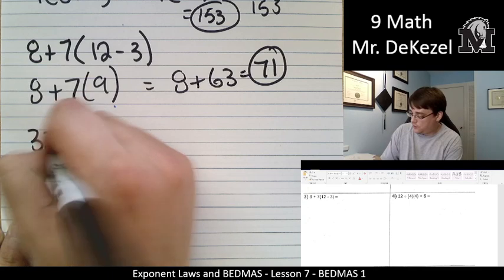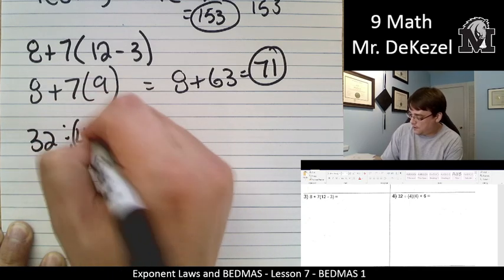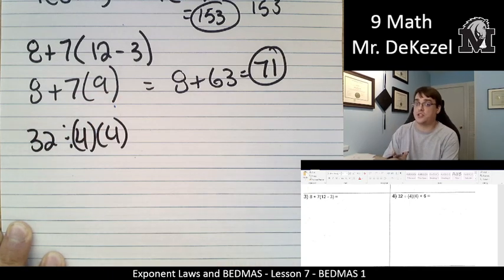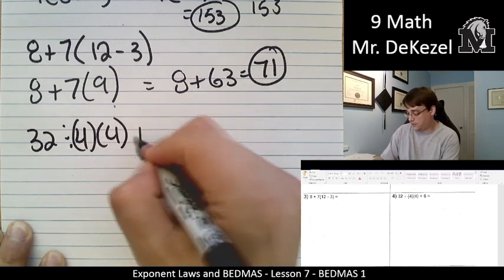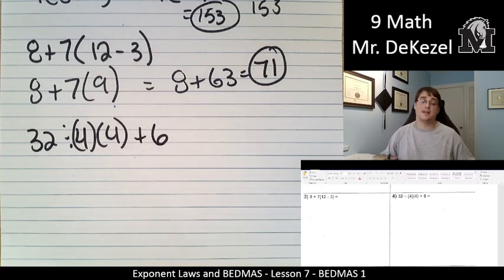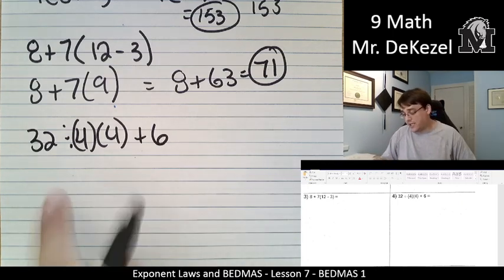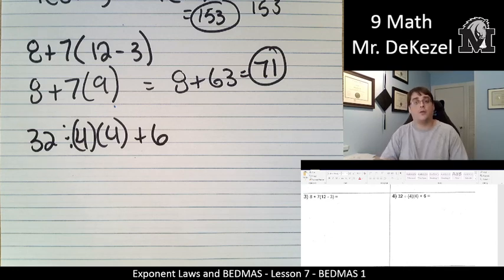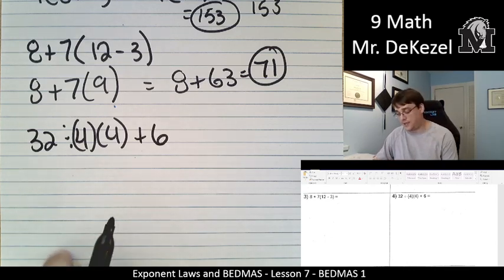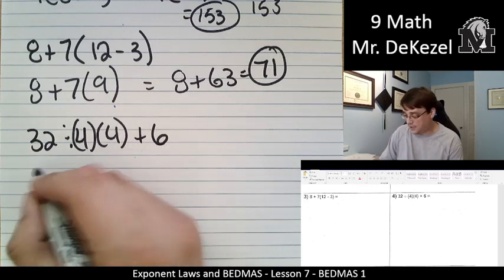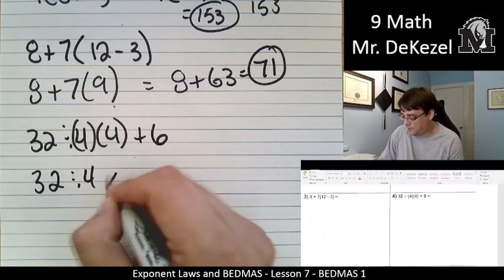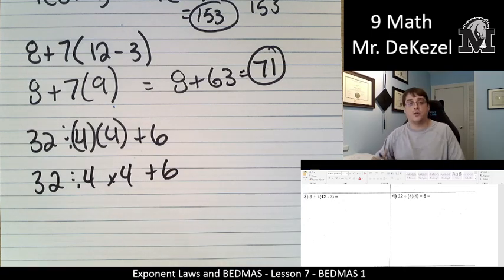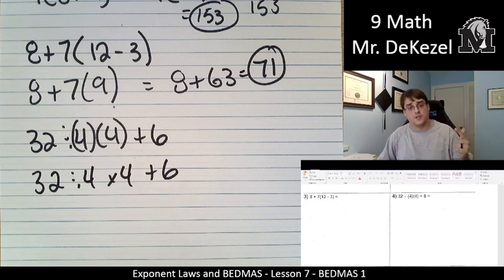We've got 32 divided by 4, and these are in brackets, but not with each other, just next to each other. When you have two things in brackets next to each other, that represents multiplied by each other. Since they are not in brackets together, then we do not do that first. It is just like writing it like this. 32 divided by 4 multiplied by 4 plus 6. It's just showing that those two 4s are multiplied by each other.